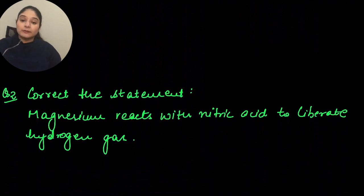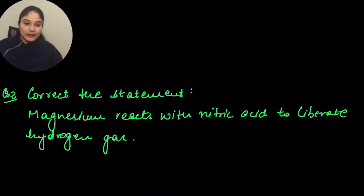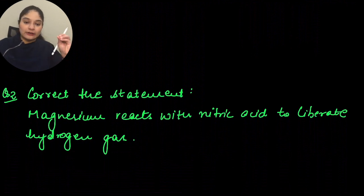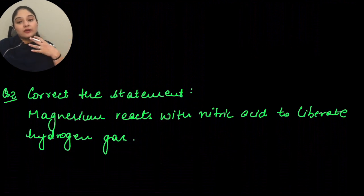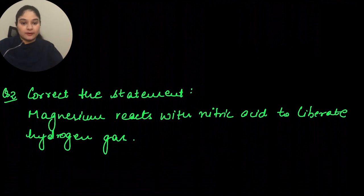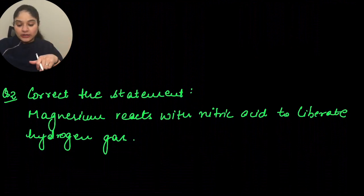The answer is: magnesium reacts with very dilute nitric acid, because this reaction happens only when nitric acid is about one percent concentrated — a very dilute one percent acid — to liberate hydrogen gas. So the answer is very dilute nitric acid.